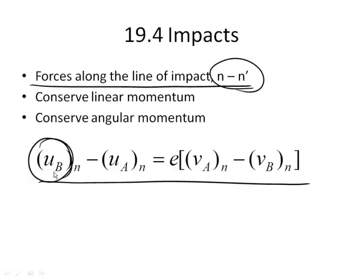Keep in mind, U represents the velocities of these two objects. It could be more than two, but we're going to consider only two objects in most of our collisions. U represents the velocities after the impact, and V represents the velocities before the impact.